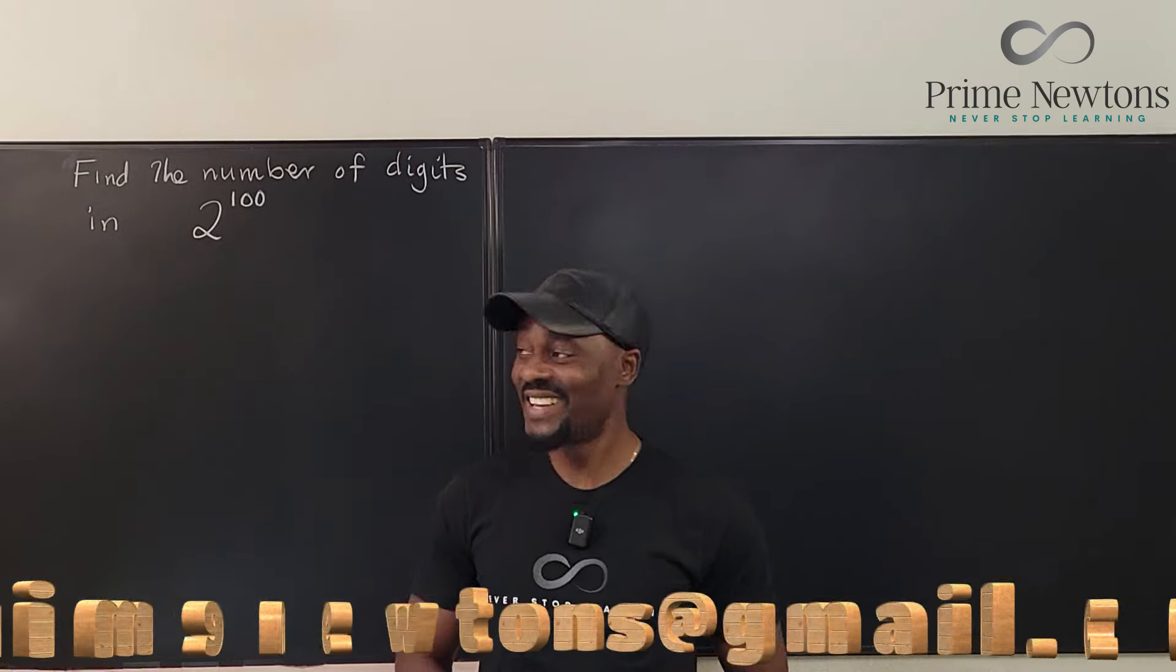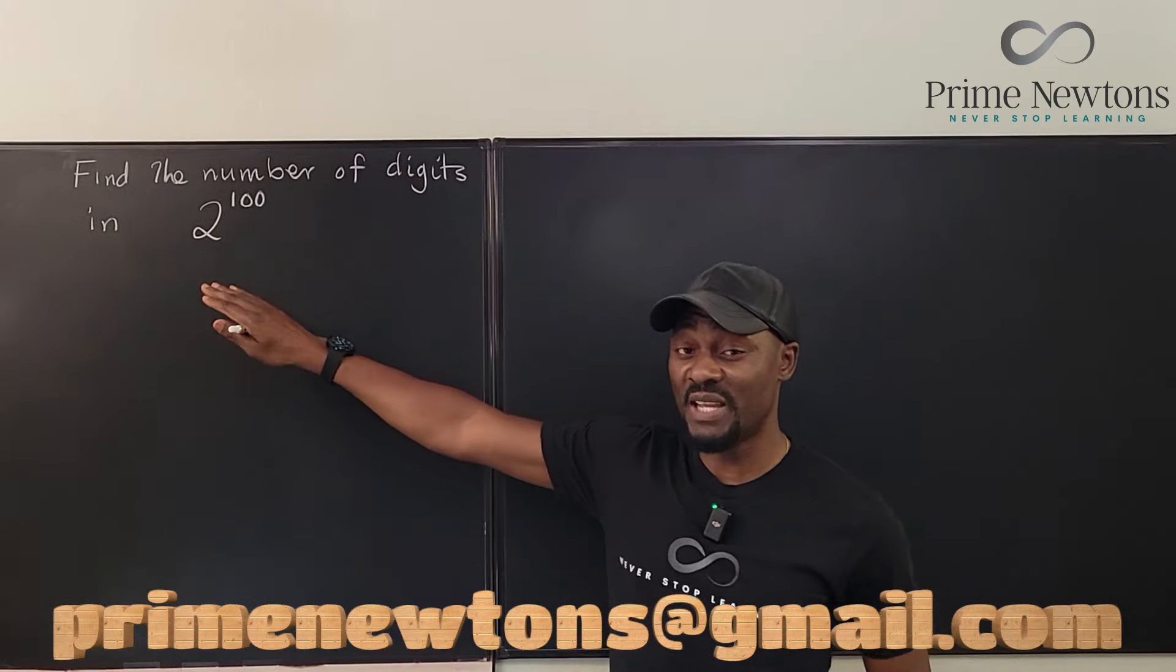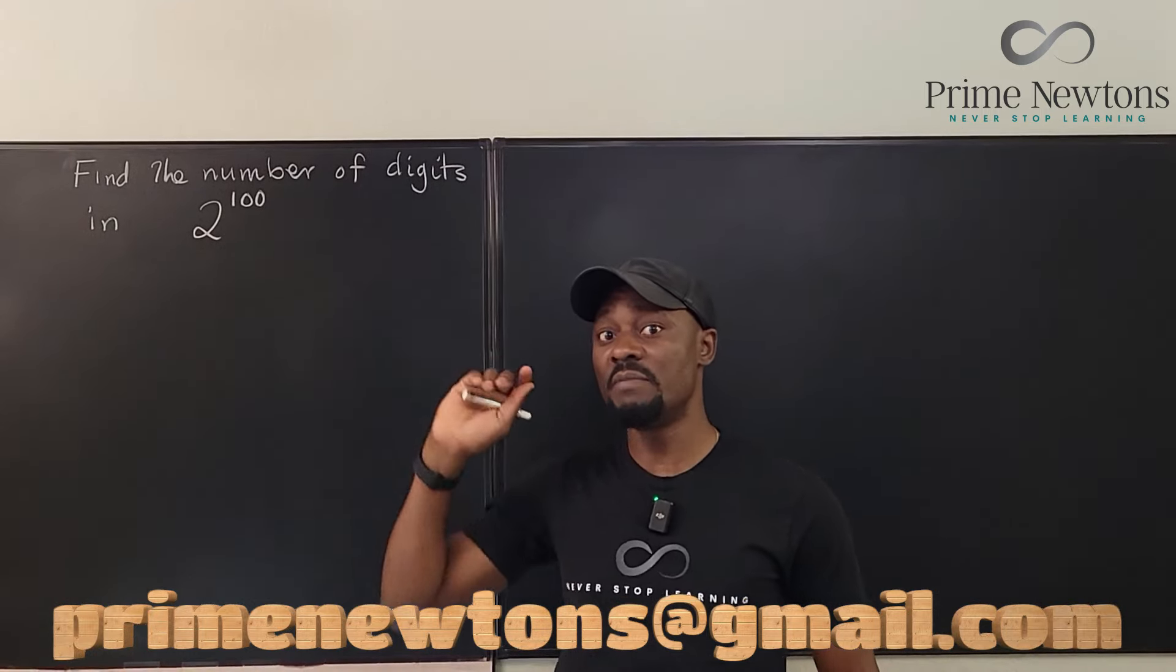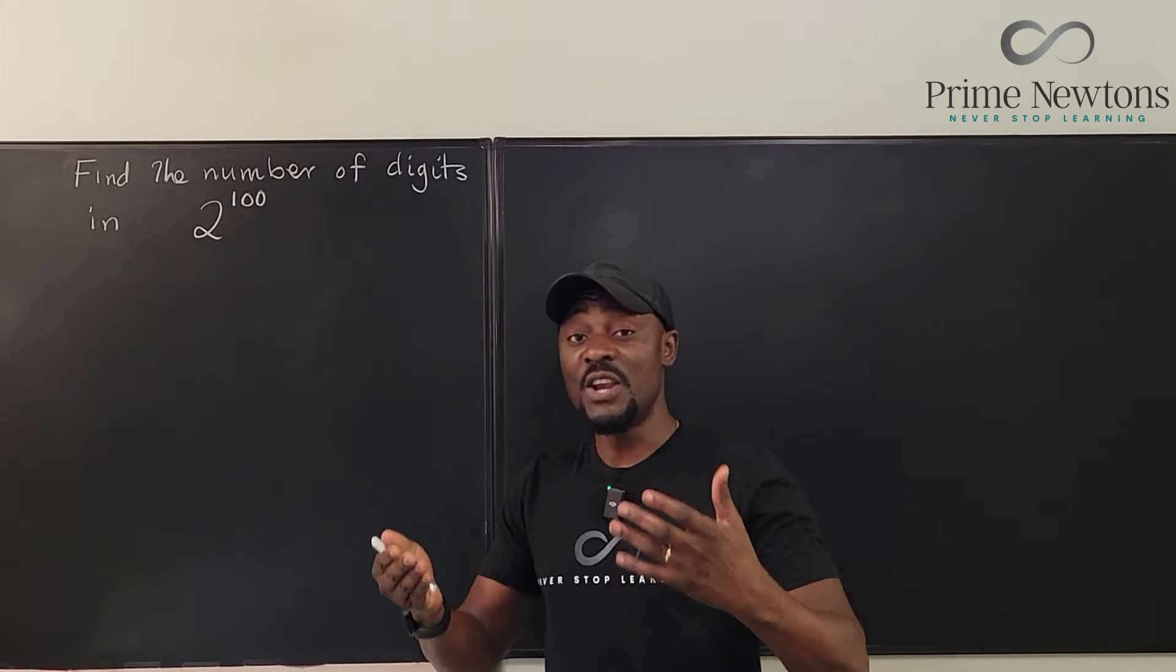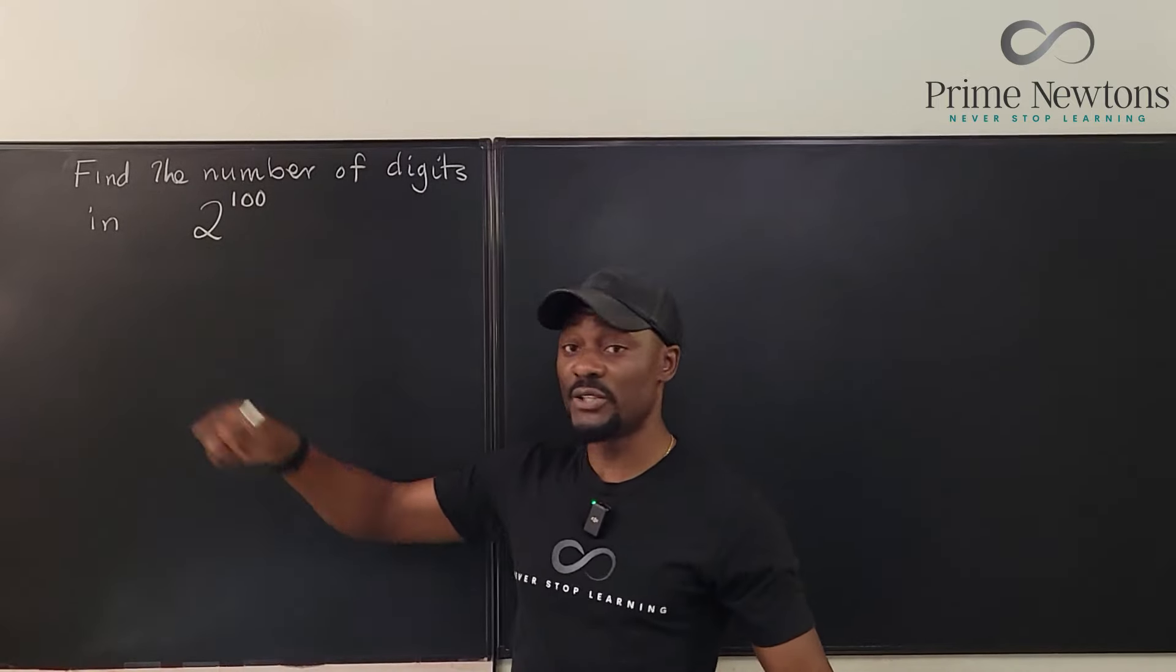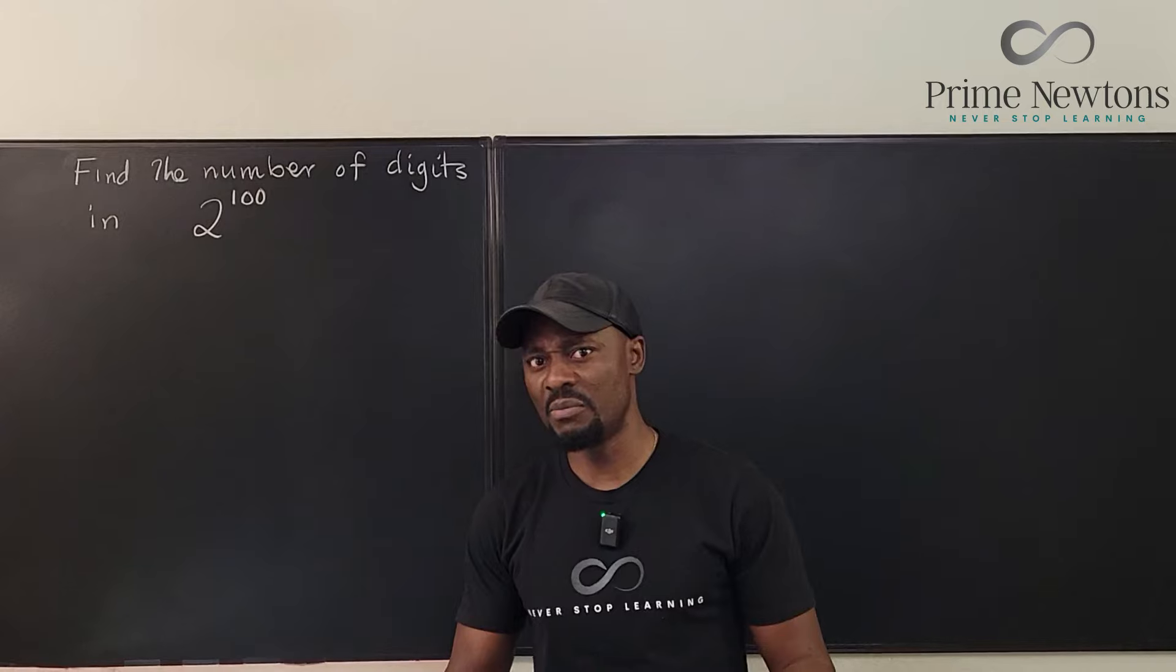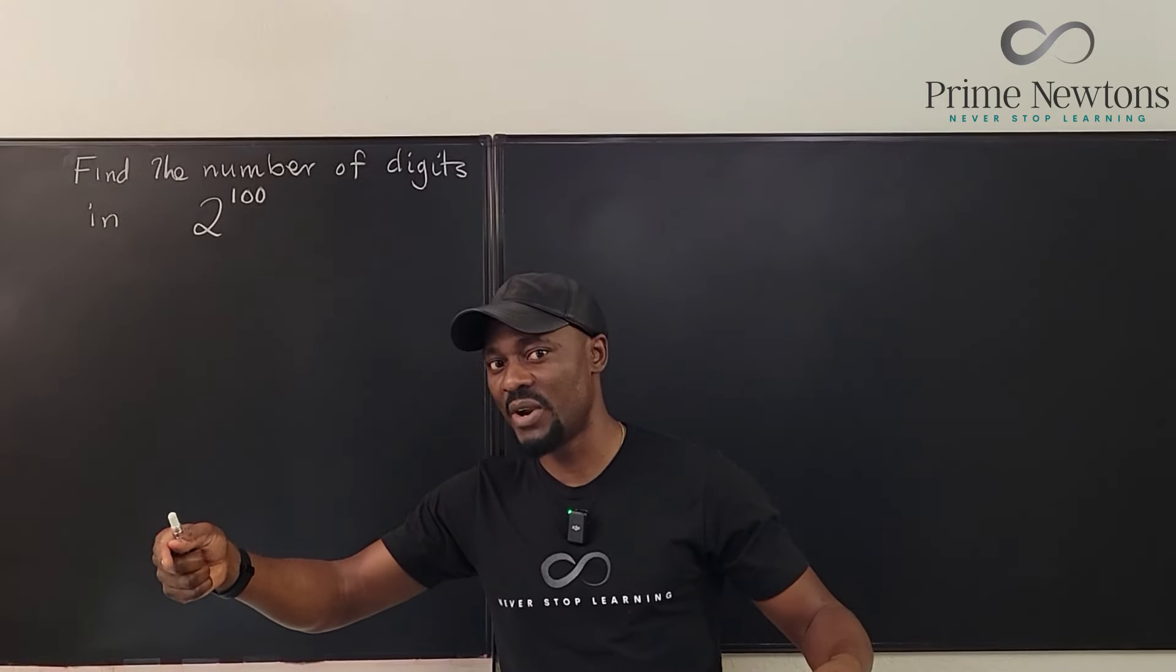Welcome to another video. This is a common problem in number theory or in math competitions. You're supposed to find the number of digits if you multiply two by itself 100 times. You're gonna get a number. How many digits will that number have?